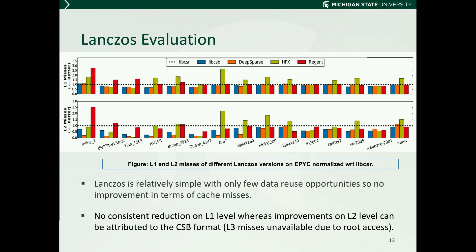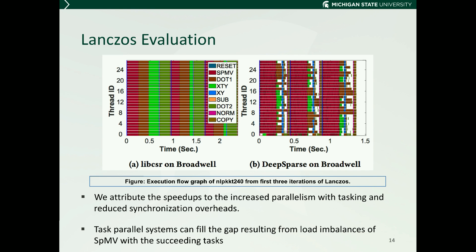This can be seen in the figure showing the cache misses comparison on EPYC for different Lanczos versions. No framework achieves consistent reduction in cache misses at the L1 level. Moreover, the improvement at the L2 level may be attributed to matrices being stored in the CSB format, since libcsb yields similar improvements. We attribute the speedups observed in Lanczos to increased parallelism with tasking and reduced synchronization overheads, as seen in the execution flow graph. It shows that task parallel systems can fill the gap resulting from load imbalances of SpMV with succeeding tasks such as XTY and dot product kernels, so each iteration completes shortly after the last SpMV task on Broadwell.